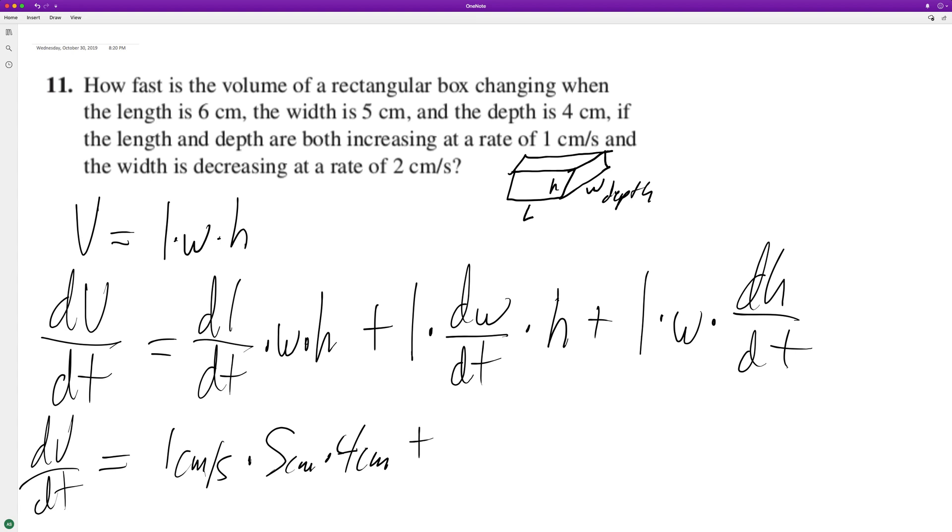So then over here, plus length which is 6, height which is 5, and then change in width is negative 2, and then we got 4. And then plus 6 times width times 1.